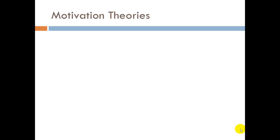One way to classify the theories of motivation is based on the way they view the role of human thought — how important are the workers' thoughts and judgments for determining their motivation, and thus their level of performance? Historically, the answer was: not at all. We can refer to these as thought-free theories.